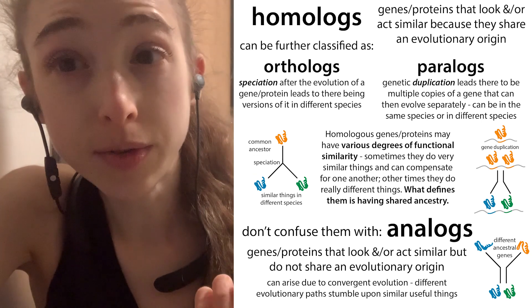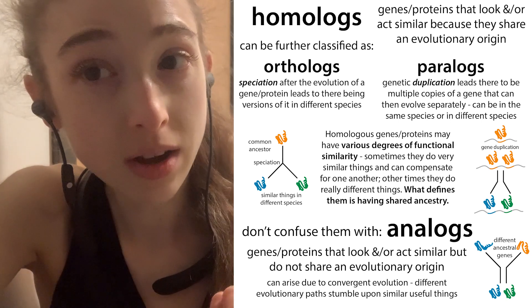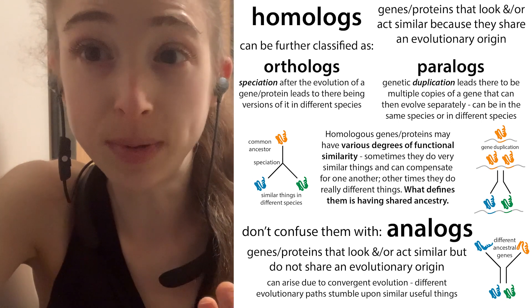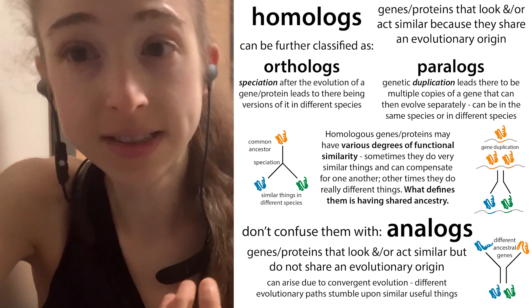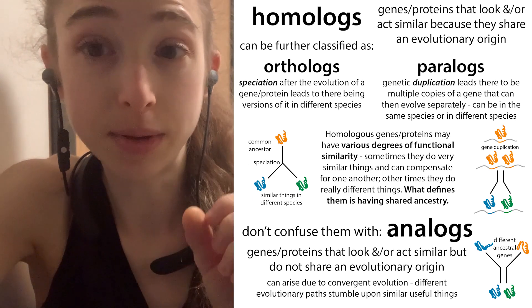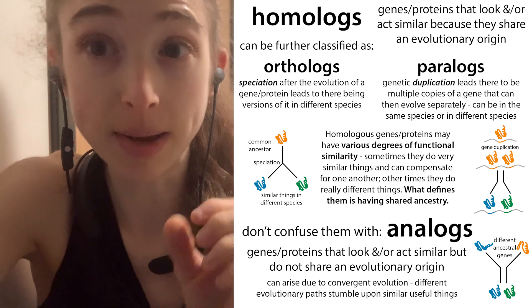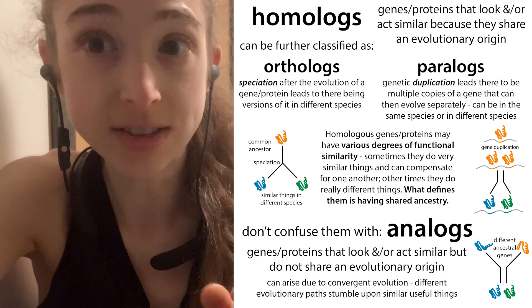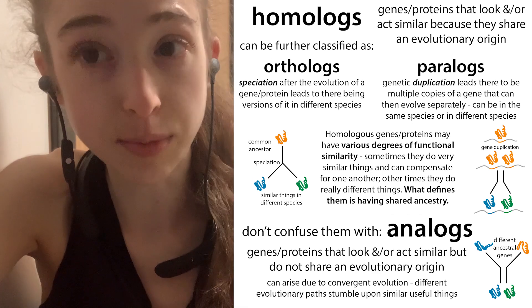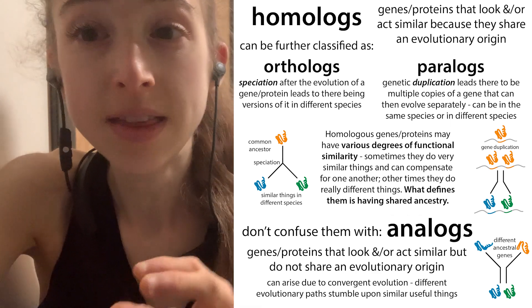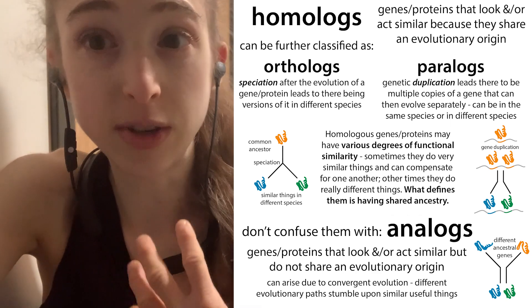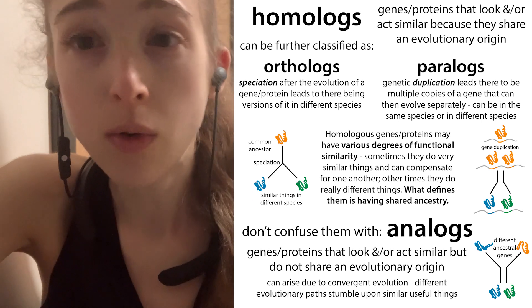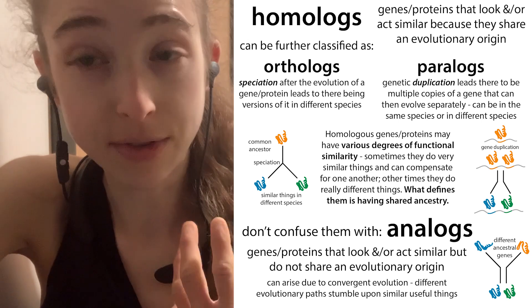We can further break these down into paralogues, which are basically where you have a genetic duplication event, so the instructions for making that protein — the gene for that protein — gets duplicated. Now you have two of those, and those can evolve separately. This can be in the same species, like AGO one through four in a person, or they can be in different species.